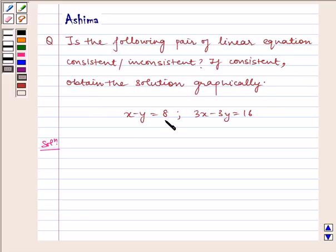We have x minus y equals 8 and 3x minus 3y equals 16. So let us write the solution now. Given to us, the linear equations are x minus y equals 8 and 3x minus 3y equals 16.